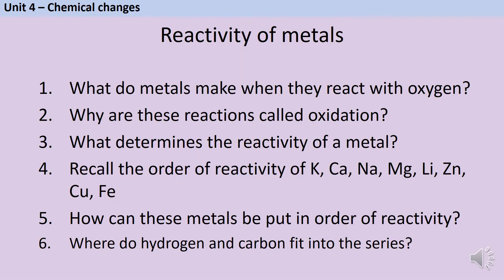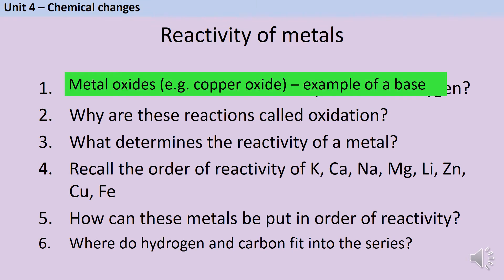Metals react with oxygen to form compounds called metal oxides — for instance copper oxide or tin oxide. These are examples of bases, chemicals that can neutralise acids. This reaction is called oxidation because the metal is gaining oxygen.